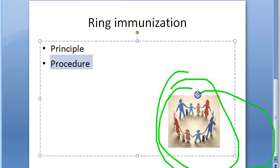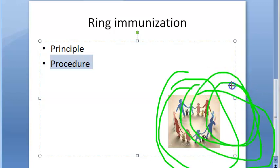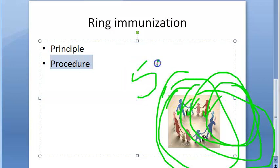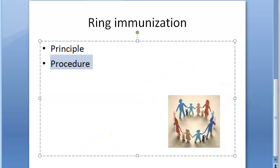So five villages or 5000 people — whichever is higher — they want to do the maximum. However, there is no hard and fast criteria; this can be modified as per the requirement.